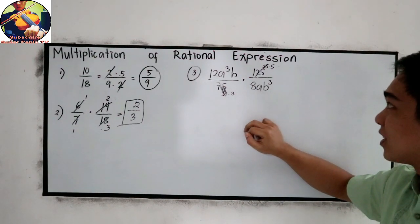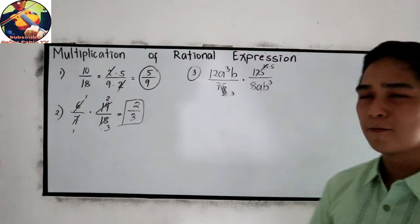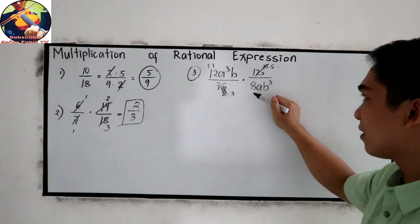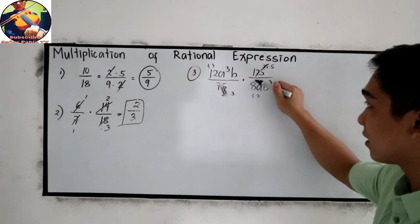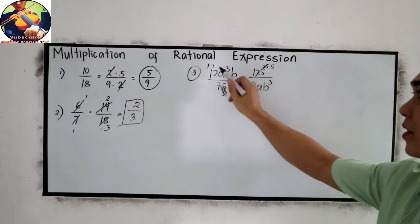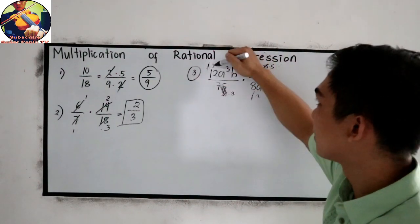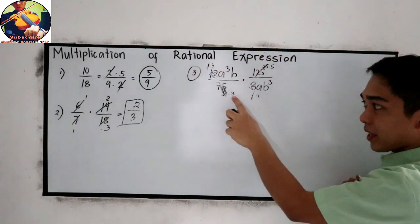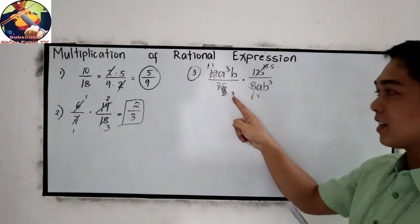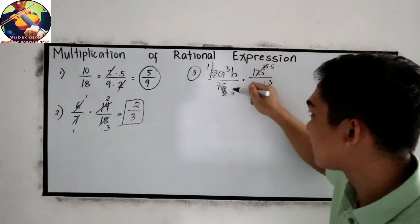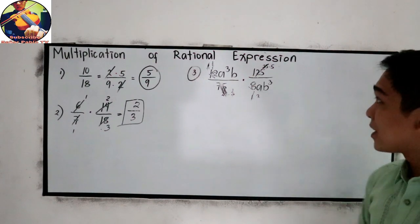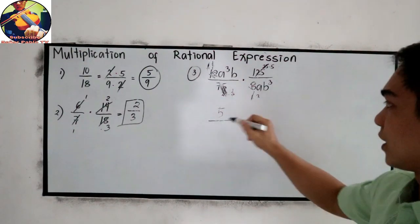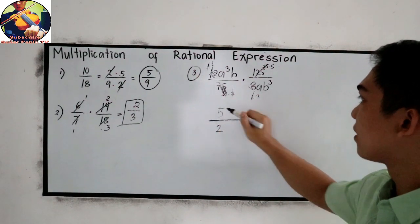How about 12 and 8? The common factor is 4. Because 12 is equal to 4 times 3 and 8 is 4 times 2. So we are going to cancel 4 and 4. The remaining number is 3 and 2. There is more. Since this is cancelled out, 3 and 3 will be cancelled out. 3 divided by 3, that will become 1. So we can also cancel 3 and 3. Now for our remaining coefficients, we have 5 for the numerator and 2 in our denominator. So 5 over 2.